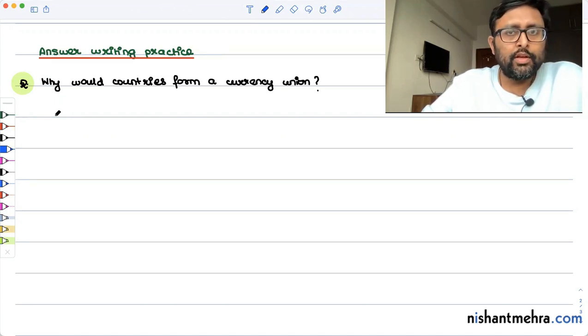One of the very important reasons is to have exchange rate stability. So when all of them have the same currency, then the exchange rate volatility is minimized. So that is the first point.